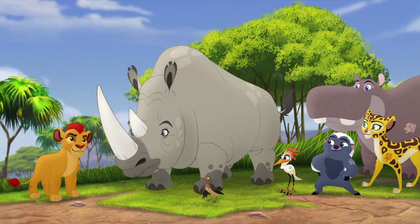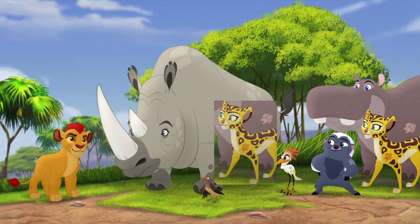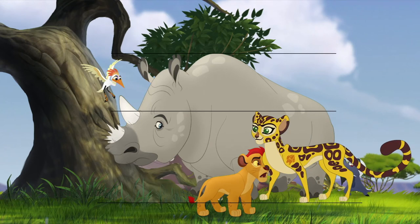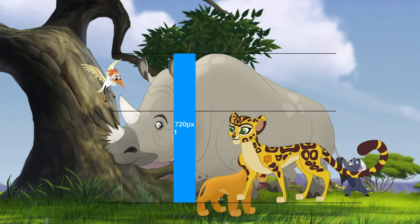Here is a screenshot from Ono the Tickbird showing Fuli next to Kifuru the rhino. Adult rhinos are around 1.8m tall, but Kifuru's front is exaggerated through perspective, so we move Fuli to the rear end of Kifuru. Using a second image of Kifuru at a much better angle, Kifuru is 720 pixels and 180cm tall, giving 720 divided by 180 equals 4 pixels per centimeter. Fuli is 442 pixels tall here, which brings her height to 110.5cm.